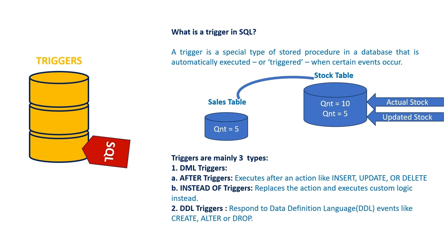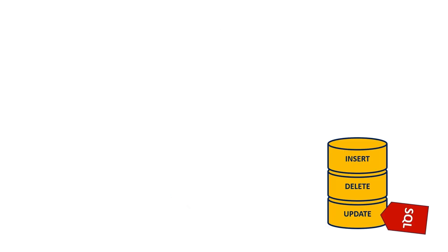Triggers are mainly three types. First is DML triggers, with subcategories: after triggers, which execute after an action like insert, update, or delete; and instead-of triggers, which replace the action and execute custom logic instead. Second is DDL triggers, which respond to Data Definition Language events like CREATE, ALTER, or DROP. Third is logon triggers, which respond to logon events in the database.